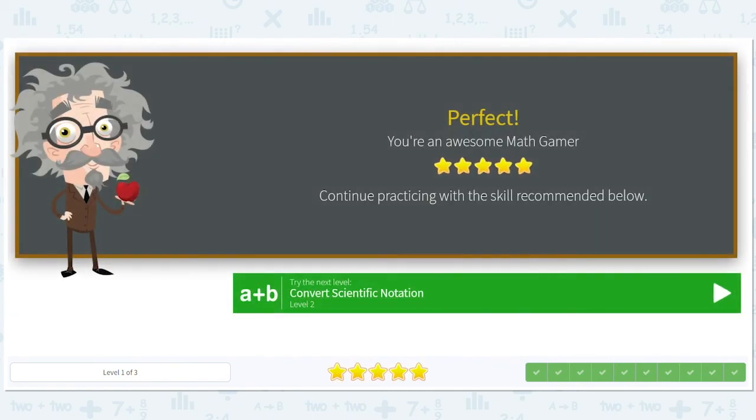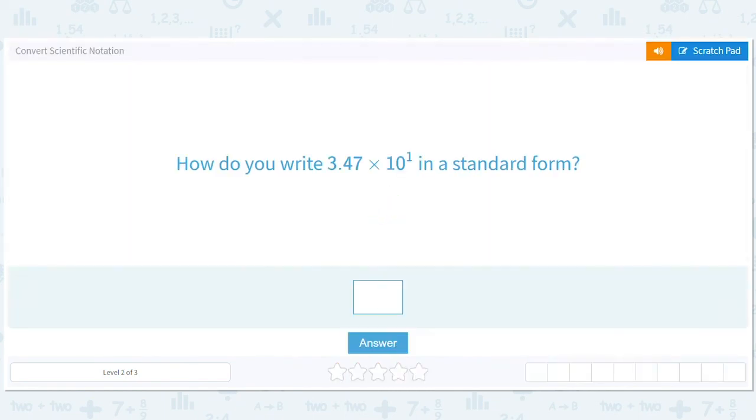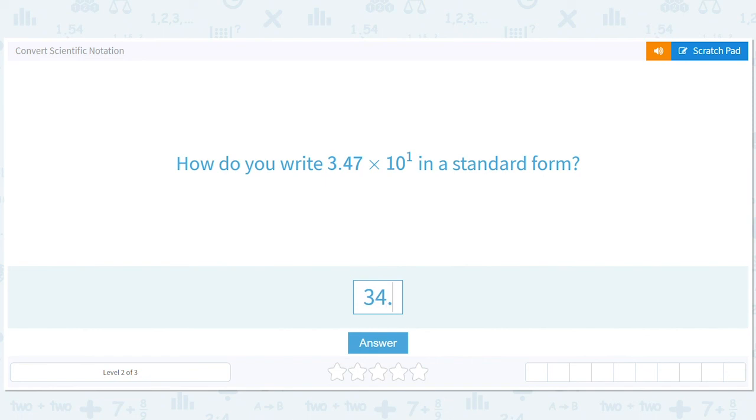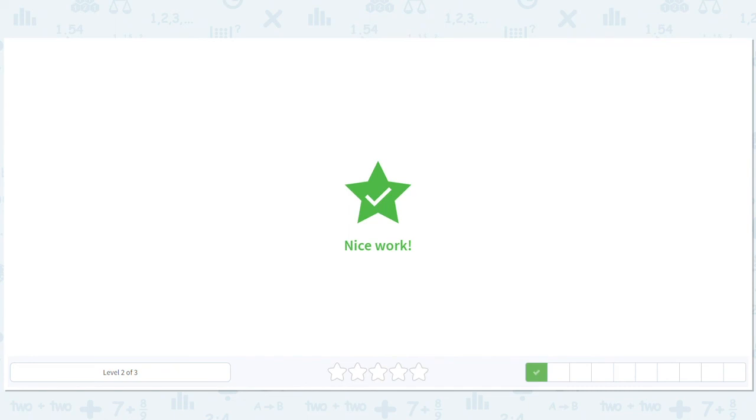Okay. I think we did pretty well with that. Let's see what the next level is. 3.47 times 10 to the 1st. Okay. So the difference here, it's slightly trickier, I guess, is that you're not going to end up with a whole number, but that's okay, right? So that's 3.47. You move it over like this, and you get 34.7. That's it. No big deal. We don't have to end up with a whole number. That's not what standard form means. It just means don't give me that 10 to the whatever thing. All right. So 34.7.